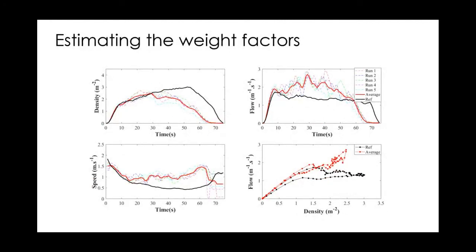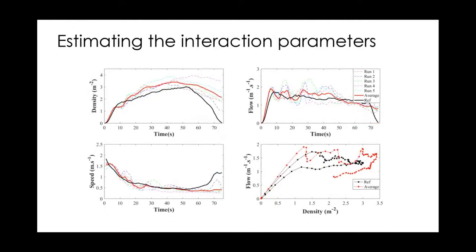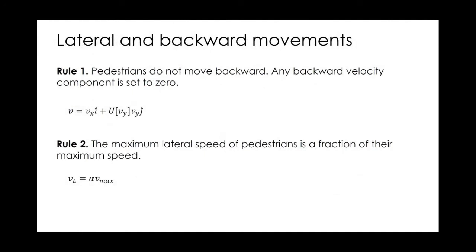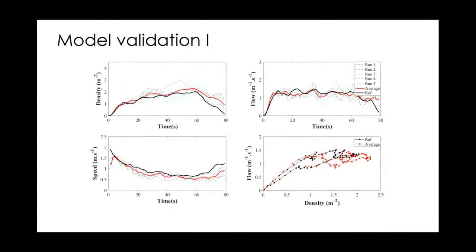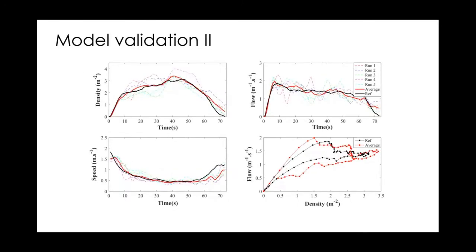We calibrated the model step by step: first the weight factors, then the interaction force parameters, then adding lateral and backward movement rules. After calibrating all parameters using trajectory data by minimizing flow and density errors, the time series of density and flow from the model matched the data very well. The fundamental diagram — black from data, red from the model — also matched well, and validation on additional data confirmed the results.